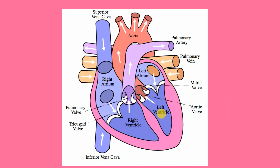When the left ventricle contracts, the blood is pushed through the aortic valve and into the aorta, which is the largest blood vessel in the body.